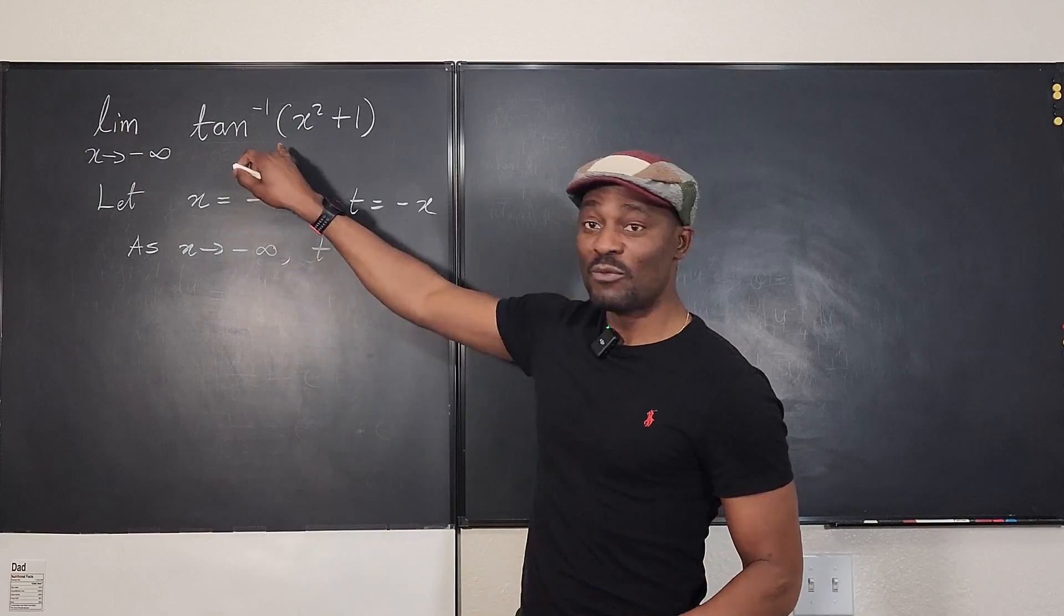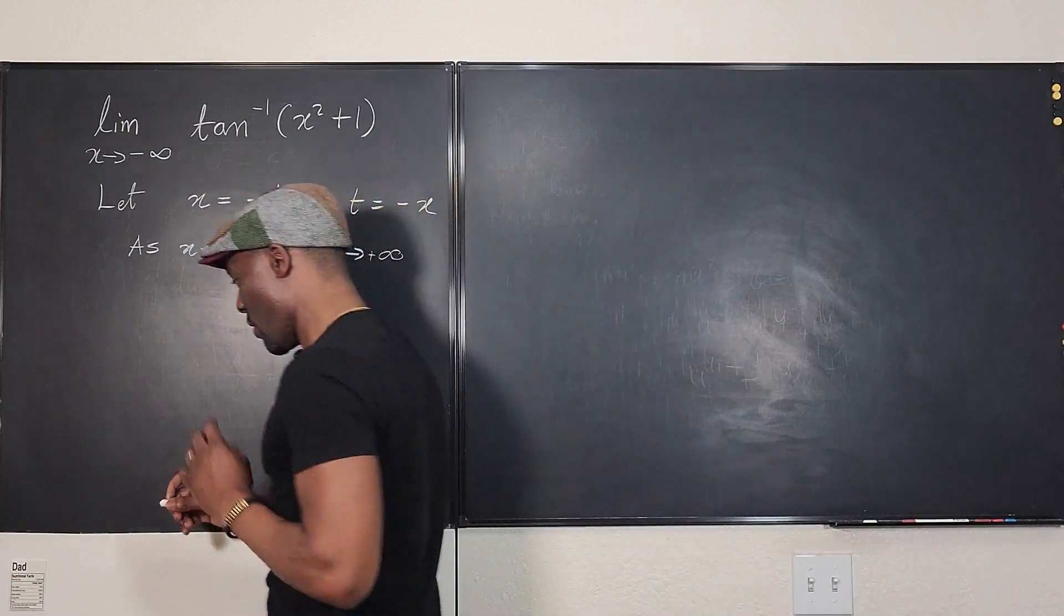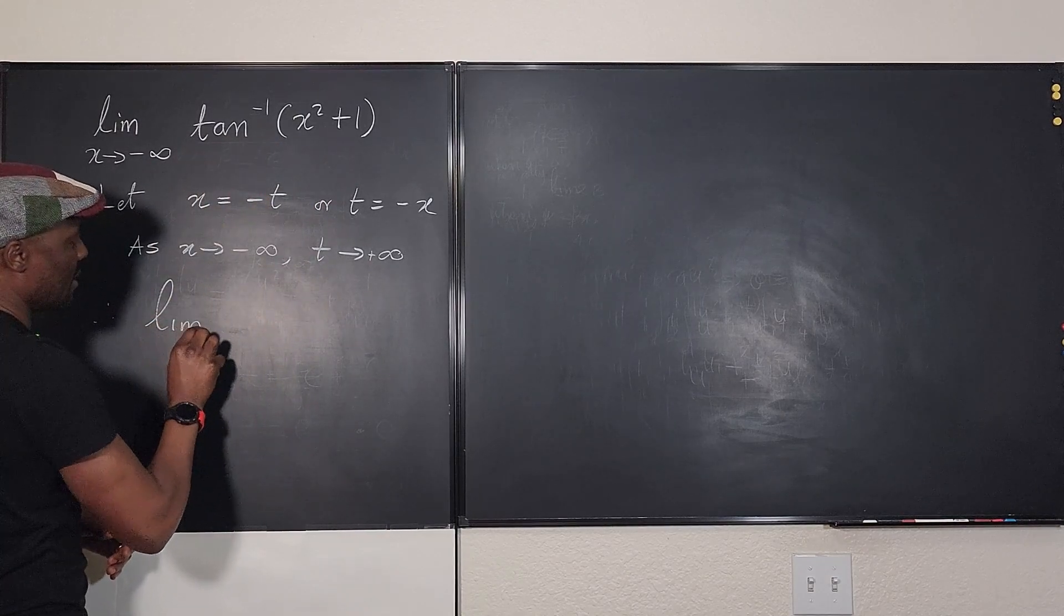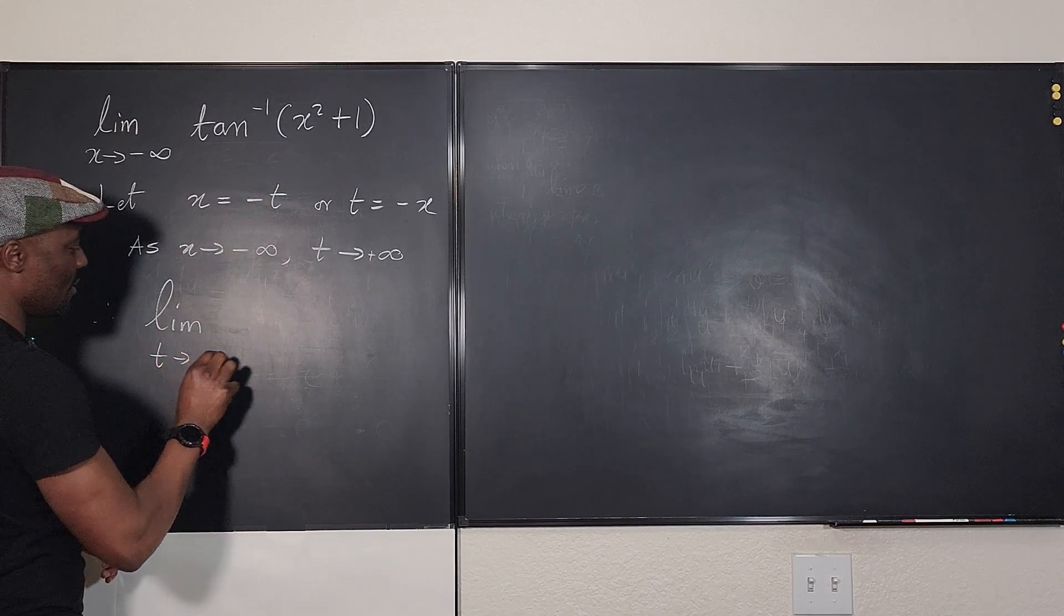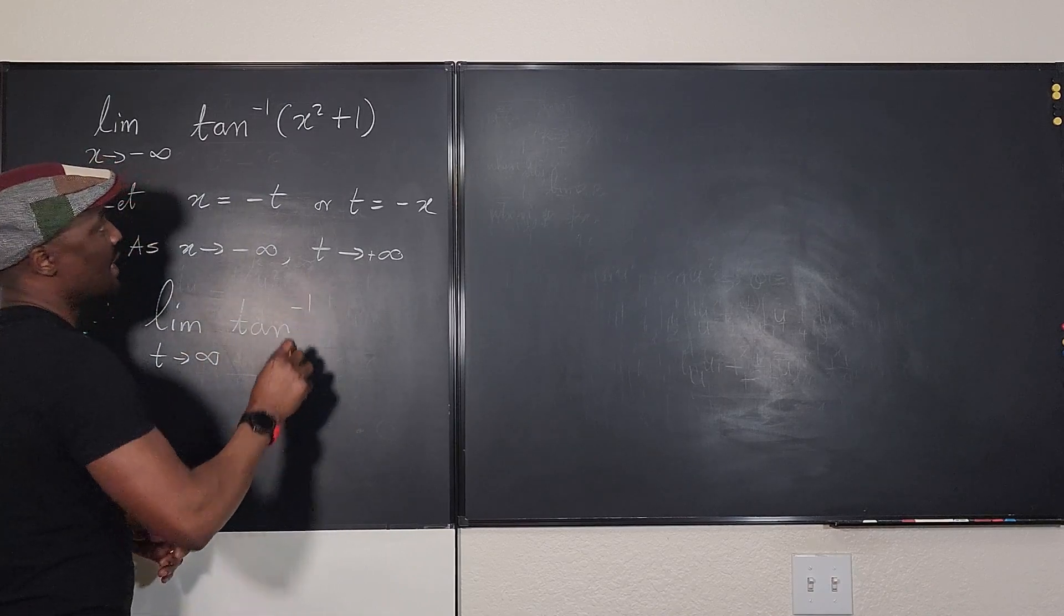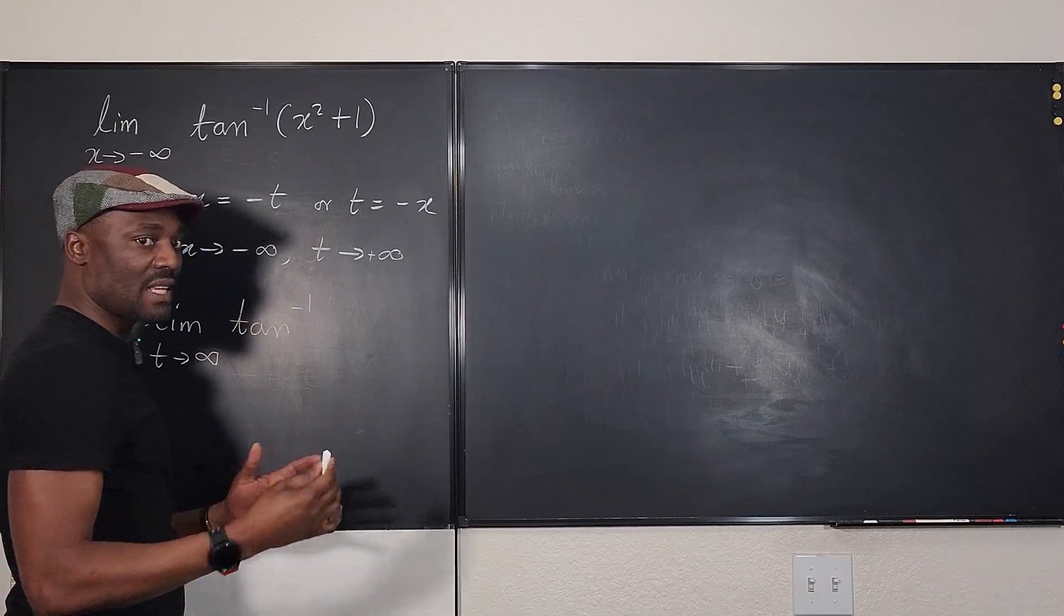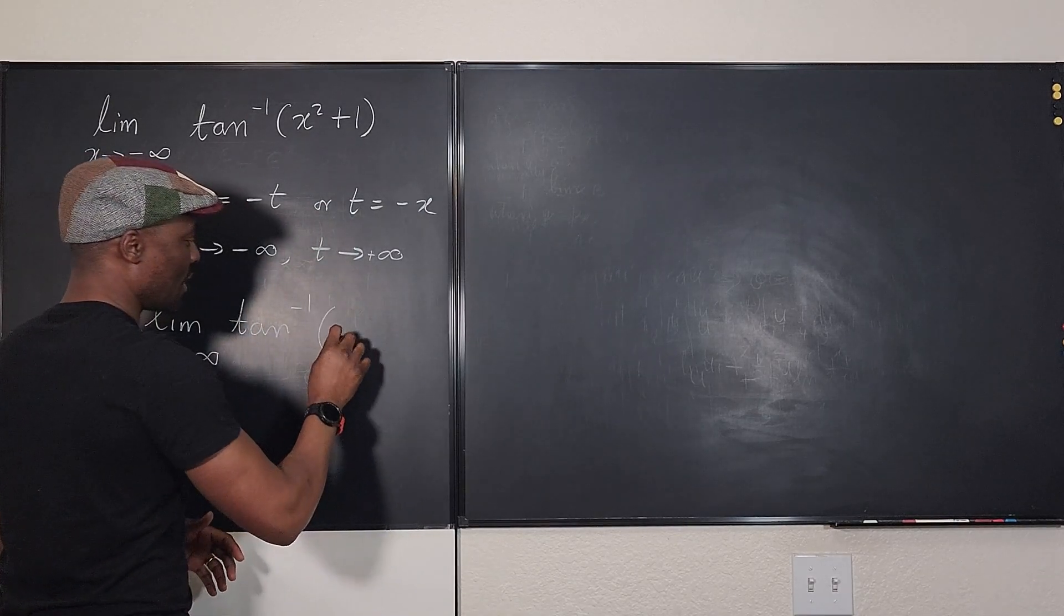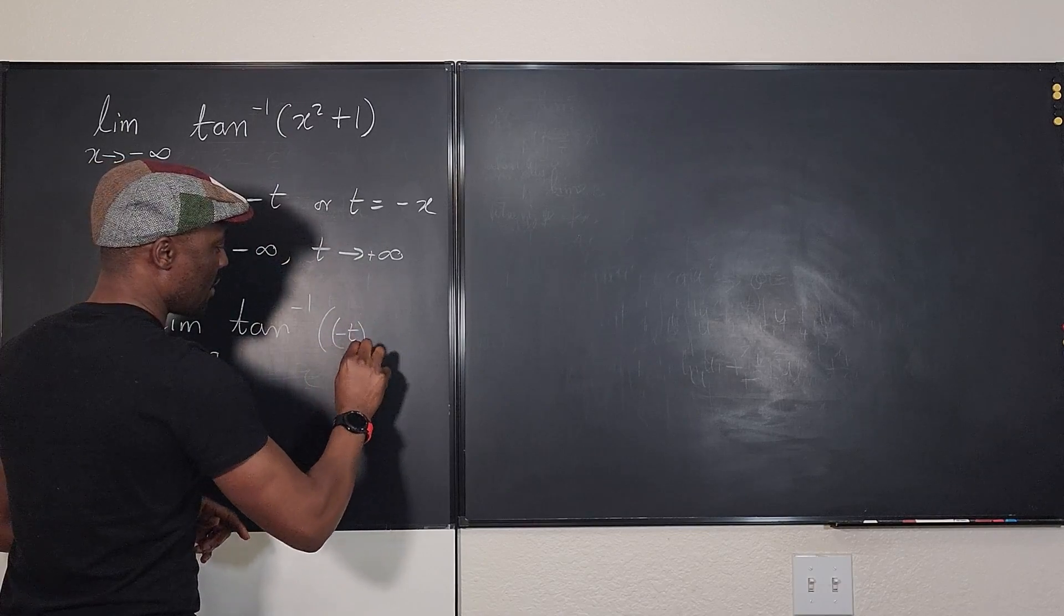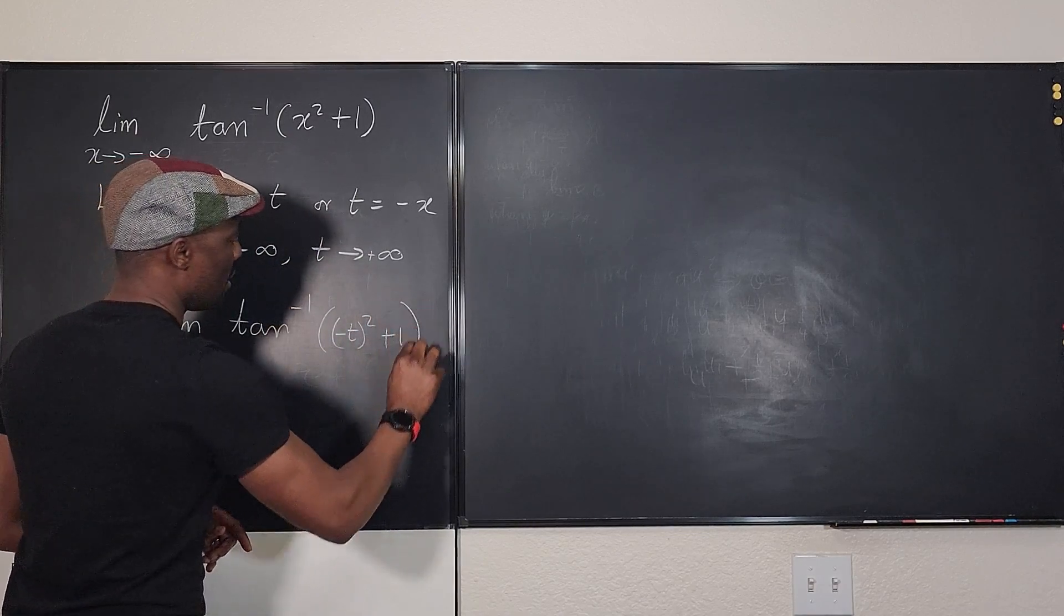Now we can rewrite this problem and say okay, therefore the problem we have is the limit as t goes to infinity of arctan. Then the problem we have here, remember x is negative, so it's going to be negative t squared plus one.